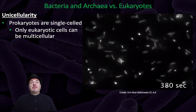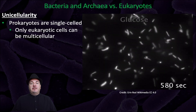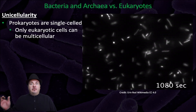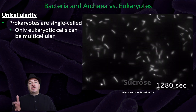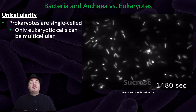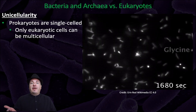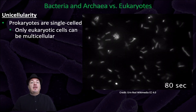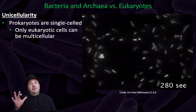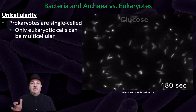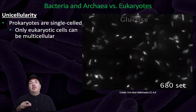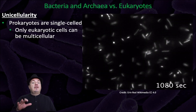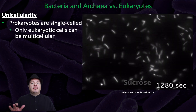Prokaryotes are single-celled, or unicellular. Only eukaryotes can be multicellular. For example, you are a eukaryote — you are built out of trillions of cells. In contrast, a prokaryote like a bacteria, one bacteria is only one cell big. Not all eukaryotes are multicellular; for example, there are yeast and protists, which are eukaryotic cells that can be unicellular. But prokaryotes are always unicellular.